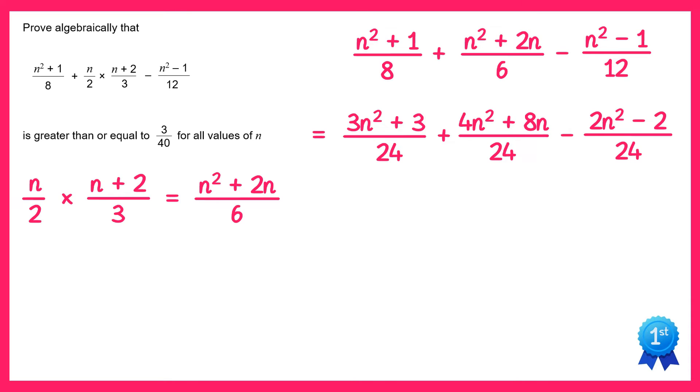We can now write this as one single fraction all over 24. So we've got 3n squared plus 3 plus 4n squared plus 8n. And for the last two terms we need to be careful: this negative applies to both of those terms on the numerator, so it's minus 2n squared but plus 2. Now we can simplify on the top: we've got 3n squared plus 4n squared minus 2n squared, which gives you 5n squared, then we've got 8n, and then 3 plus 2 for the constants is 5.